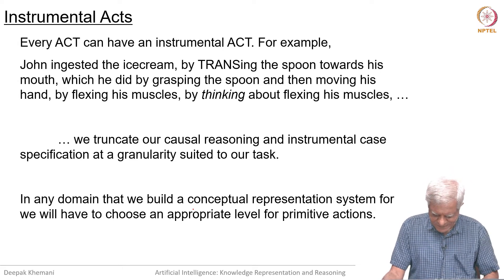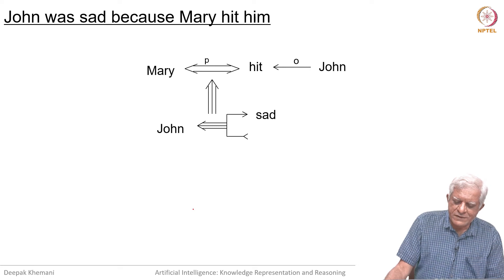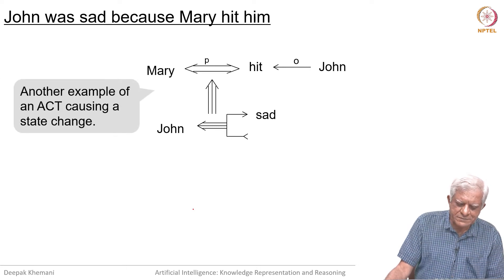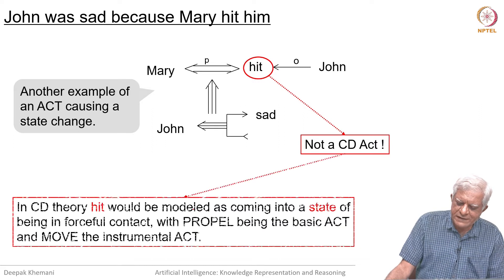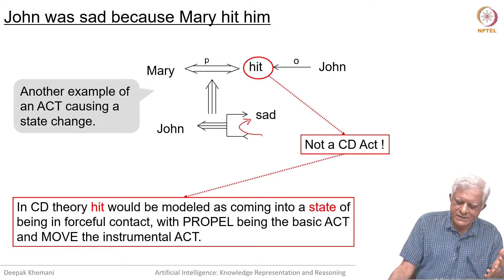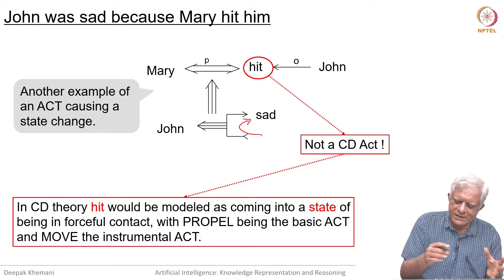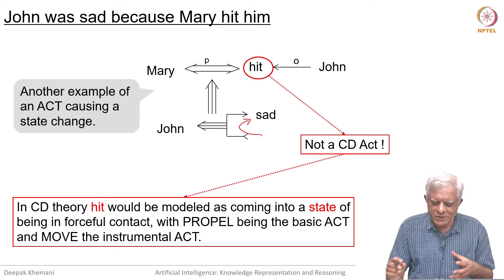Let us look at a few sentences and how we would represent them. Here is the sentence: 'John was sad because Mary hit him.' We want to say that Mary hitting John resulted in John going into the state of becoming sad — an act causing a state change. The act is that Mary hit John, and the state change which results from that act is that John became sad.